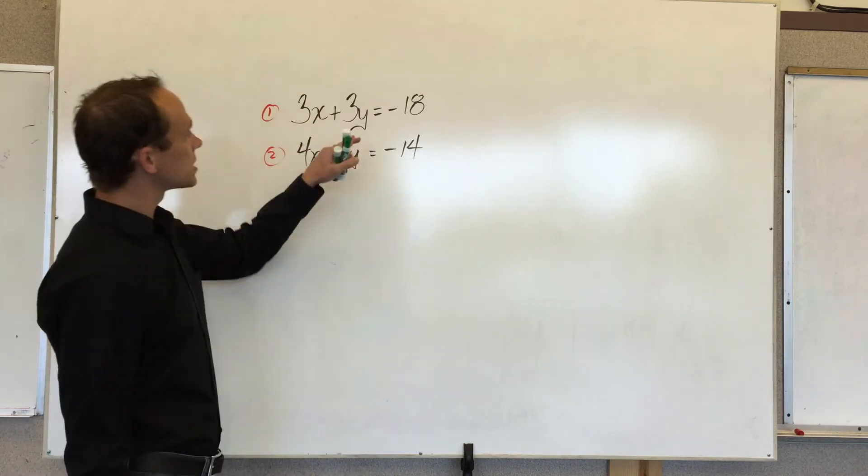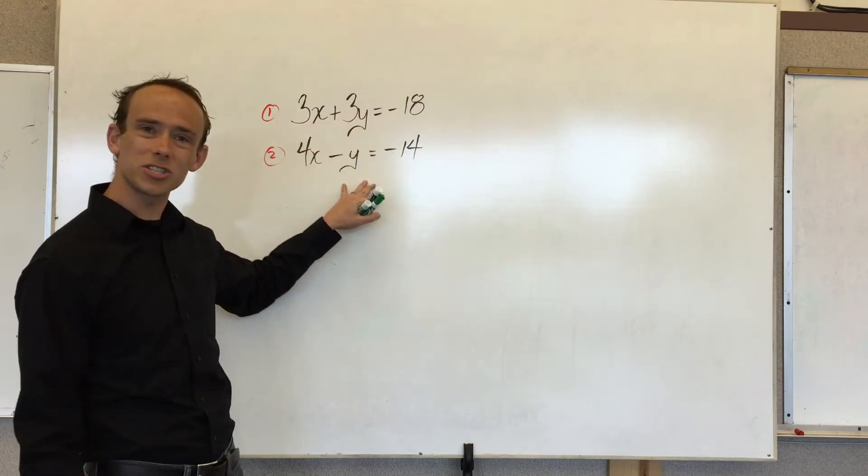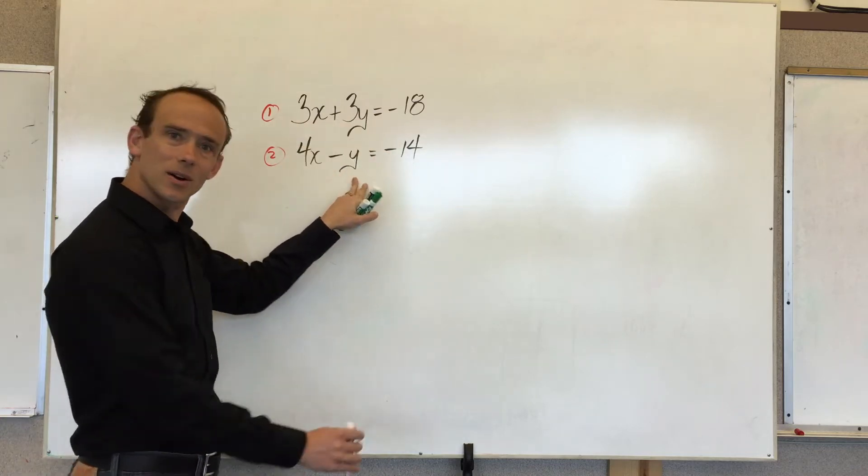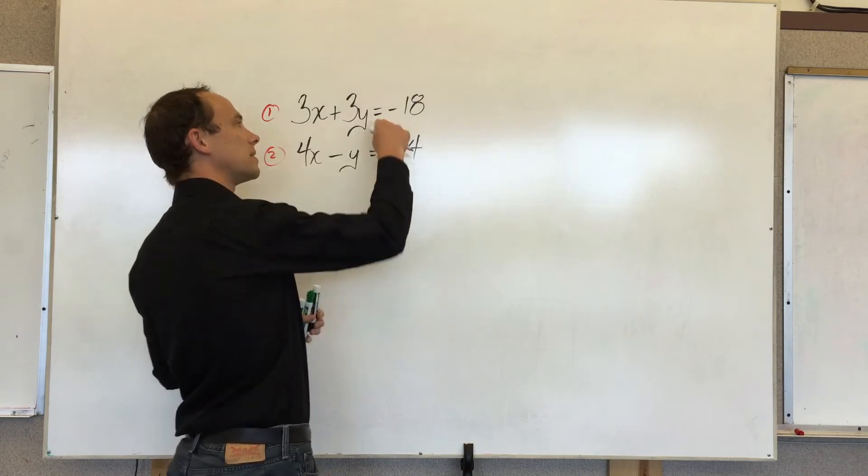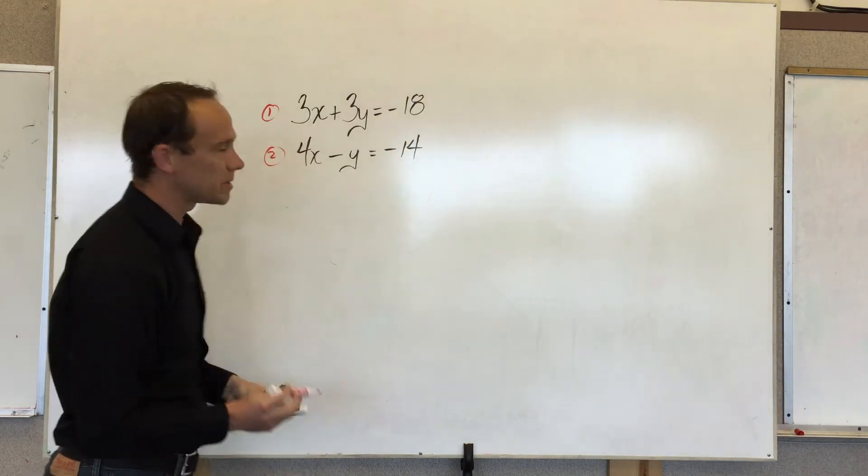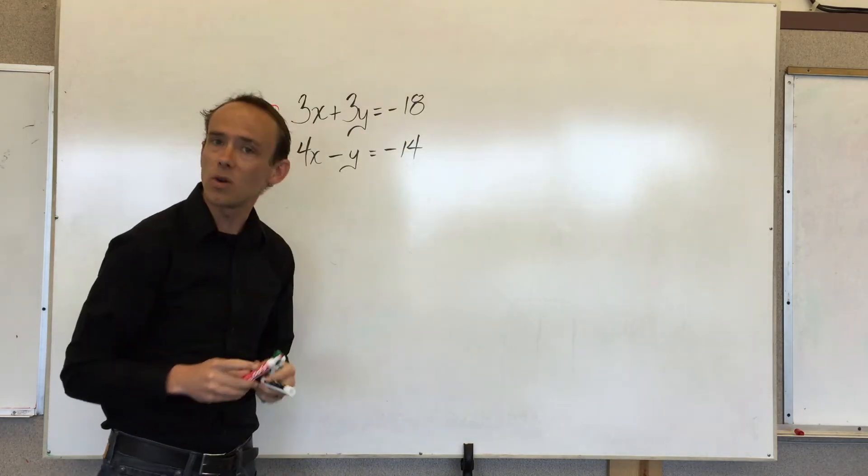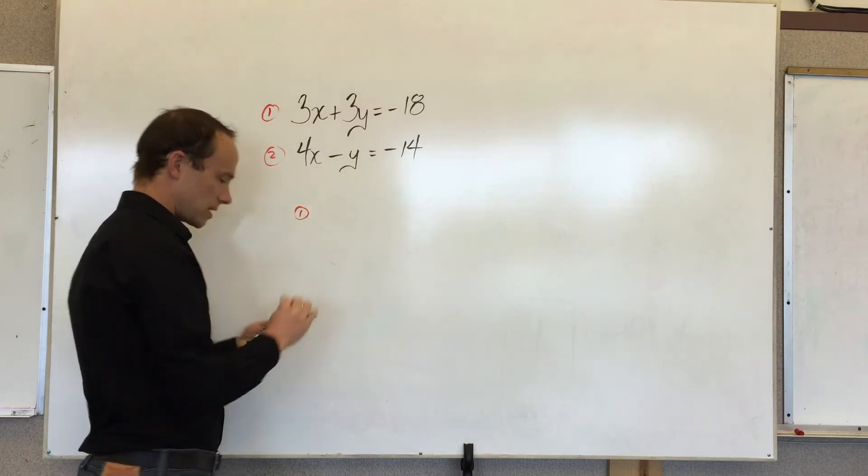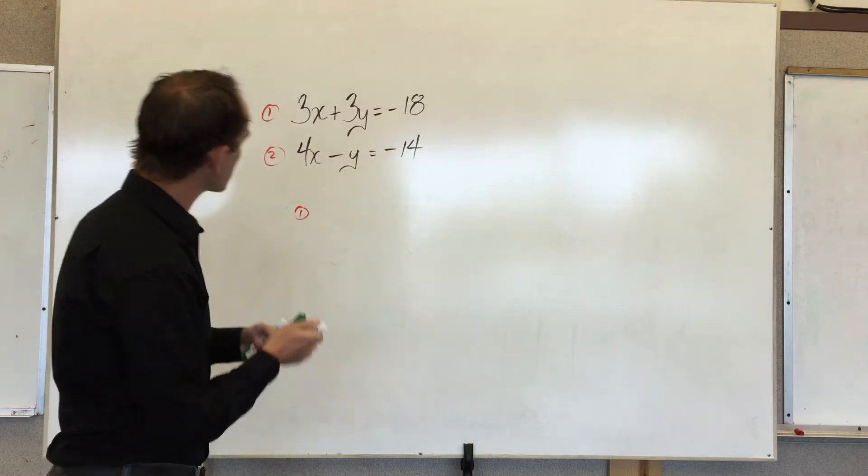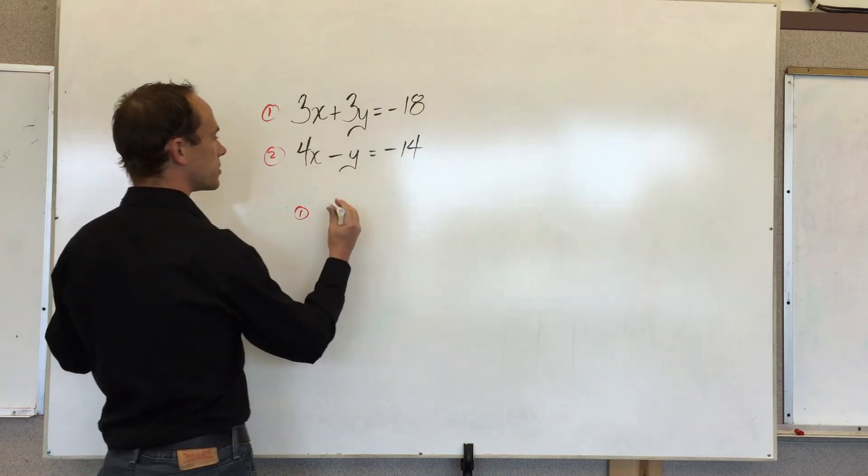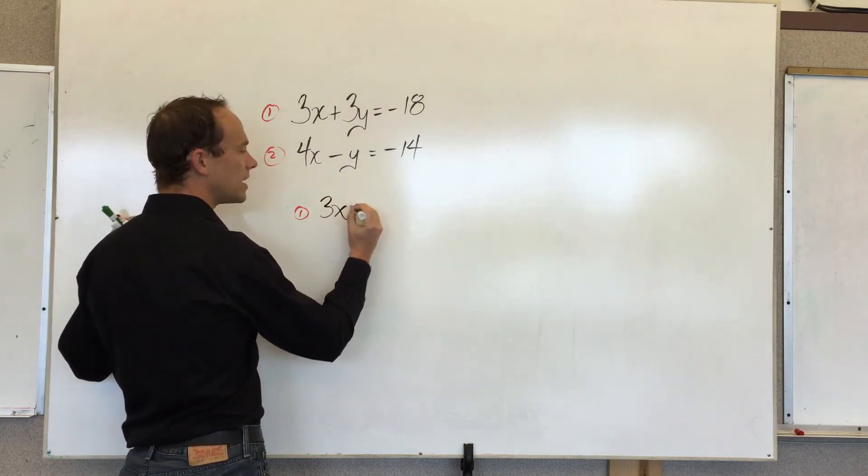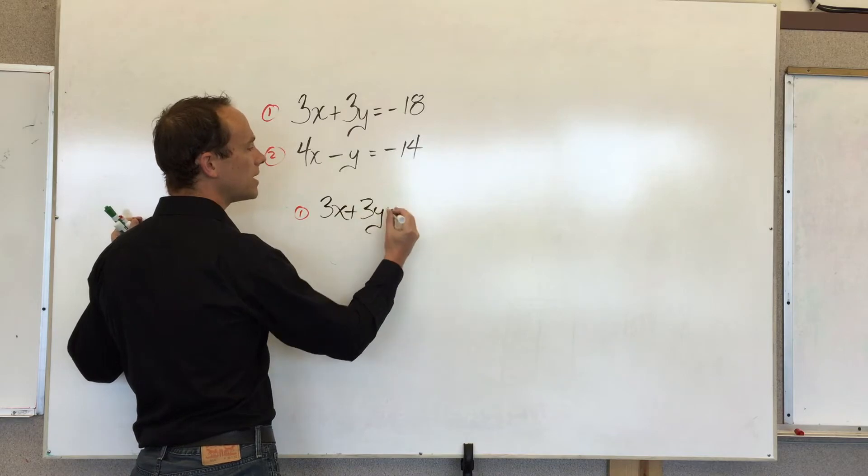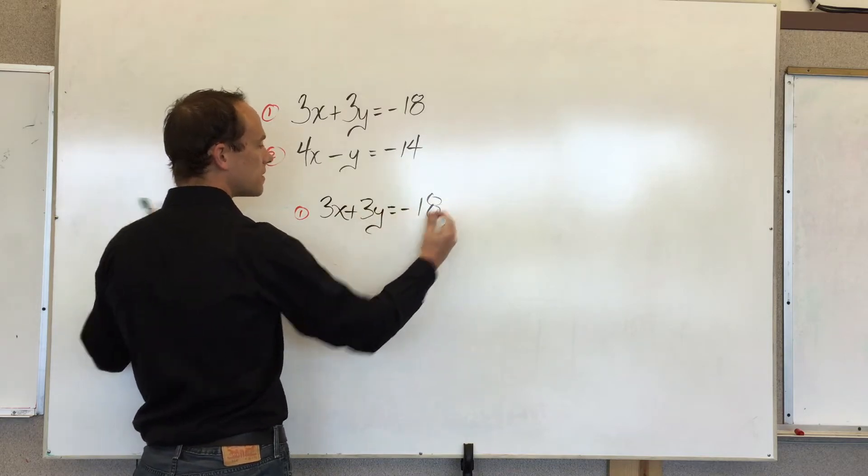My goal is going to be to solve one of these equations in terms of y. Solve for y and then I'm going to substitute it in. So I'm going to start with equation number one. I have no particular reason why I started with number one. So let's go. Let's rewrite it. We got 3x plus 3y is equal to negative 18.